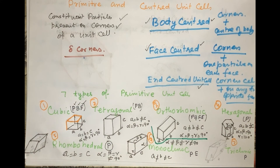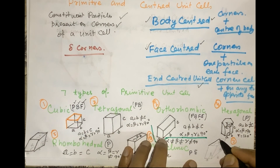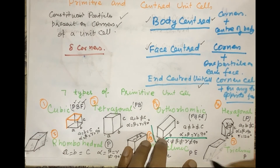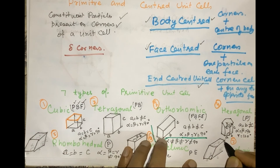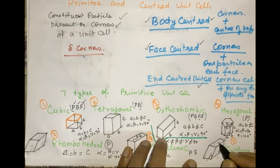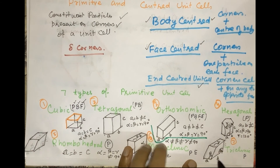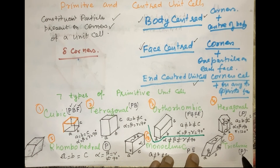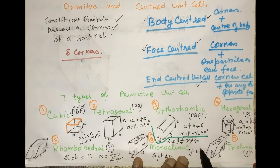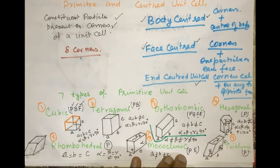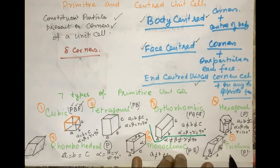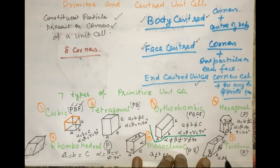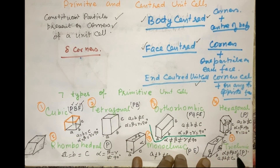The seventh primitive unit cell is triclinic. In triclinic, A is not equal to B and is not equal to C. Also, alpha is not equal to beta, is not equal to gamma, and none are equal to 90 degrees. Triclinic is possible only in primitive unit cells.